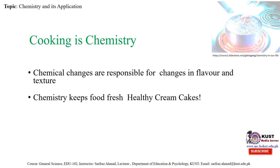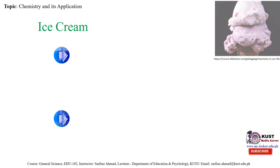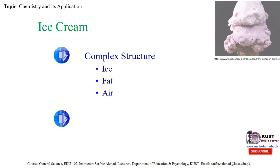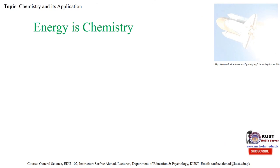Chemistry keeps food fresh and healthy — cream cakes, ice cream. How does ice cream become stable? Definitely there is a combination of some chemicals, and with those chemicals we get ice cream. This is a complex structure like ice, fat, air, and sugar — and how it becomes stable is due to chemistry.